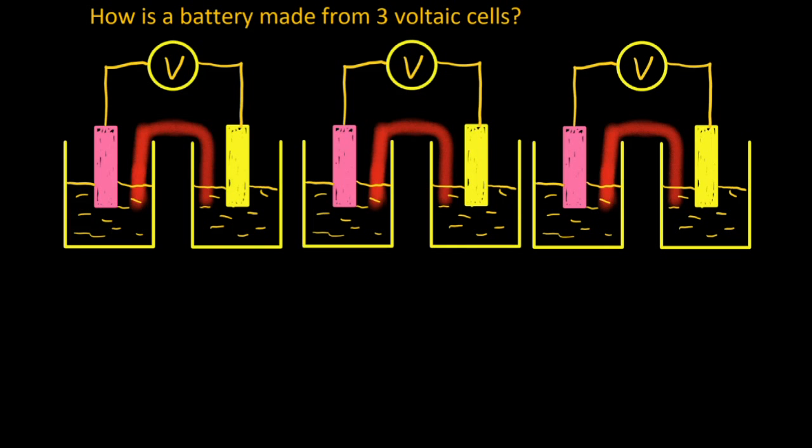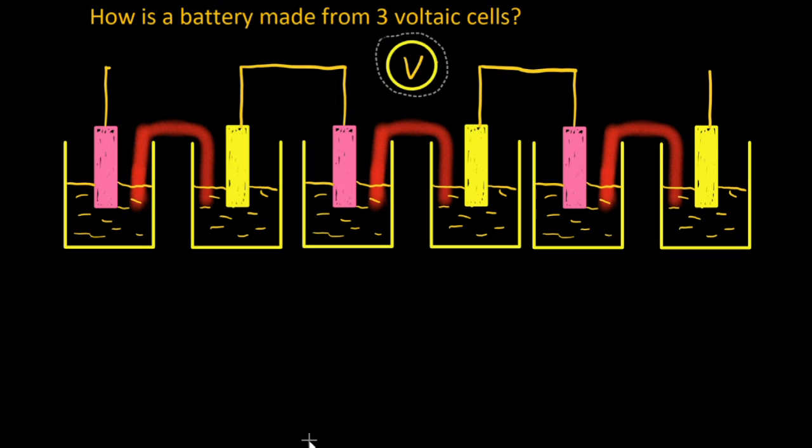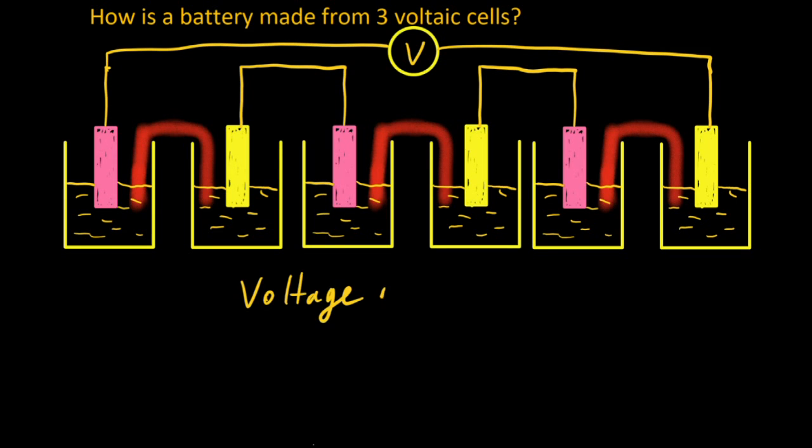Finally, how is a battery made from three voltaic cells? Well, draw out the three voltaic cells, erase all the wires at the top, leave the middle voltmeter, and then join them up just like I've shown you. I encourage you to try and draw this out for yourself. It looks easy but it's also easy to mess up. And we're done.